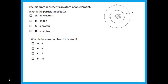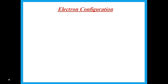Let's look at a question: the diagram represents an atom of an element. What is the particle labeled X? X is the positive particle inside the nucleus, which is the proton — answer C. What is the mass number? Add up everything inside the nucleus: four positives and five neutrals gives four plus five equals nine — answer C.